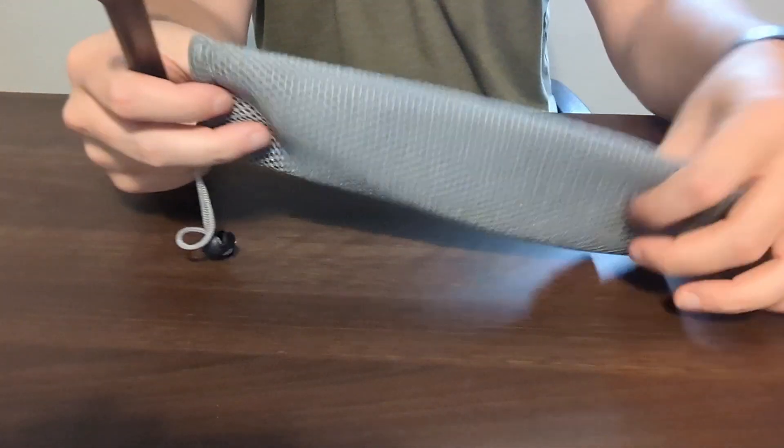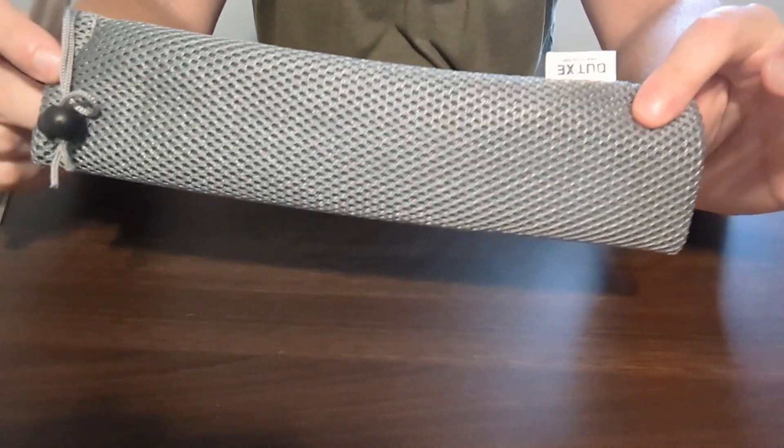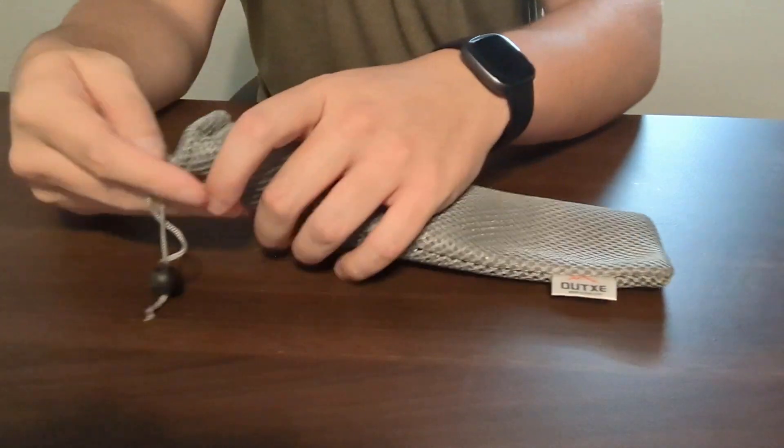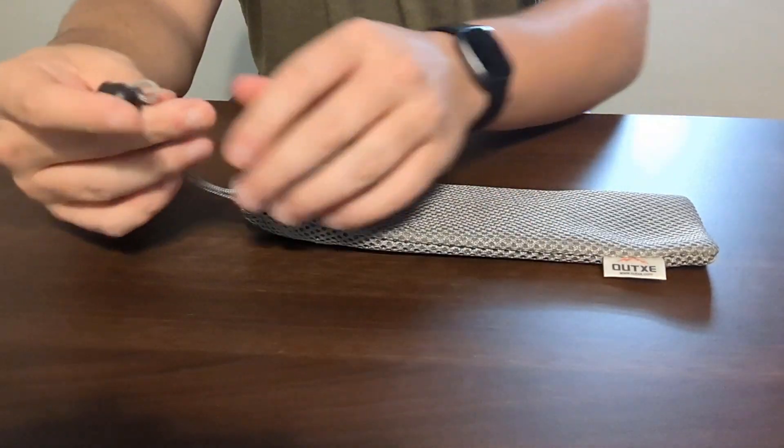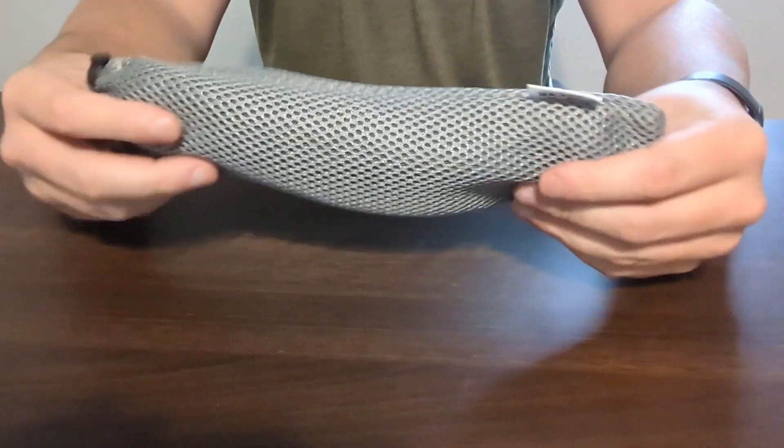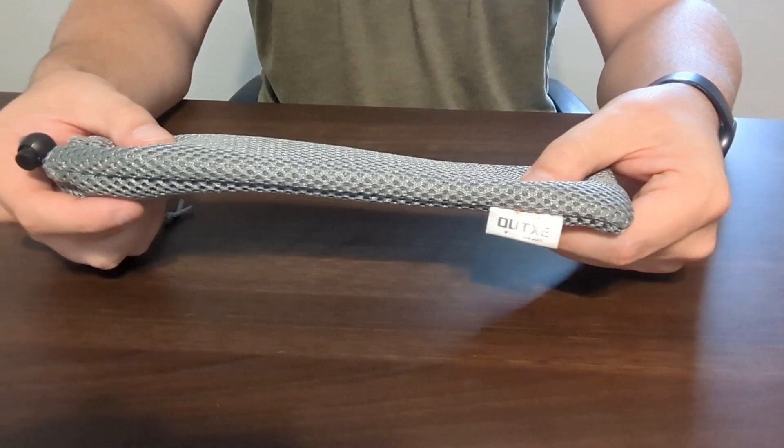Another cool thing about this bag is you can see there are little holes in it, which allows airflow. After you're done eating, you can put it back in this bag and hang it from a tree or somewhere nearby, and it will actually help dry these utensils.